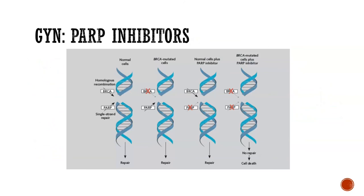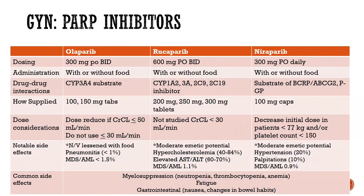For our gynecologic population, using PARP inhibitors has become more prevalent in the past couple of years. There are three different PARP inhibitors available: olaparib, niraparib, and rucaparib. The dosing is listed, and thankfully this drug can be taken with or without food — most people tolerate these better with food. Class effects of PARP inhibitors include nausea and vomiting risk, blood count effects, fatigue, and gastrointestinal effects such as diarrhea.